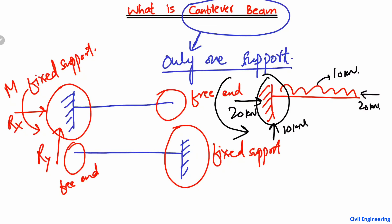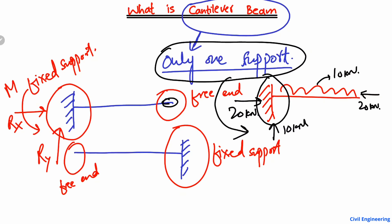So all the loads will be supported only at one end, and this is a fixed end. This is the main differentiation of the cantilever beam from the other types of beam — it has only one support and can take all the reactions at one end, while the other end is free and is always hanging in the air.